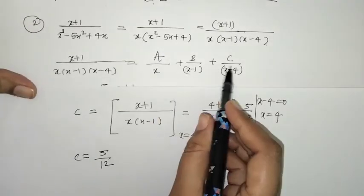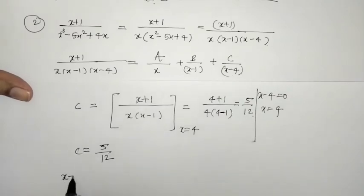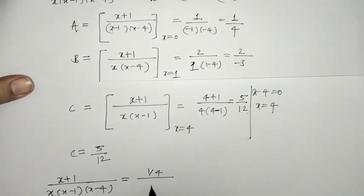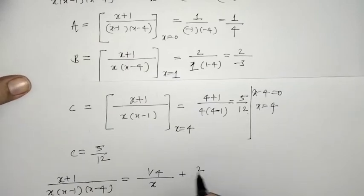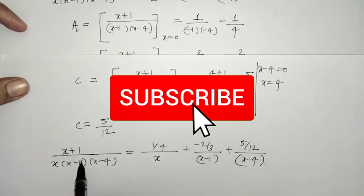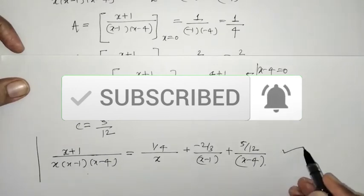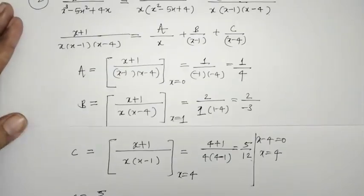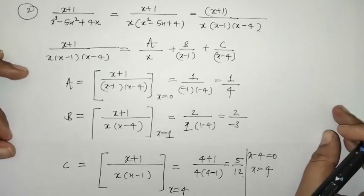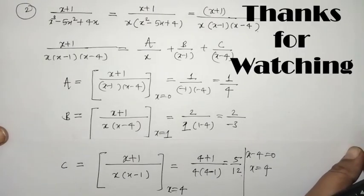Putting the values of A, B, and C, we get: (x+1)/[x(x-1)(x-4)] = (1/4)/x + (-2/3)/(x-1) + (5/12)/(x-4). So we have resolved this rational function in partial fractions. This is the method of partial fractions for non-repeated linear factors. That's it for now — see you in the next video. Thank you, keep watching.